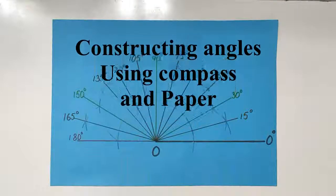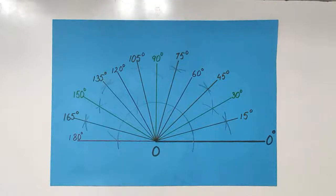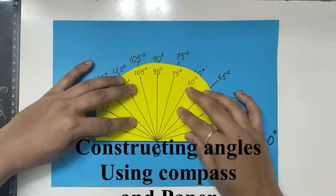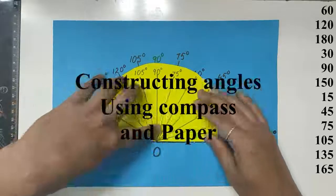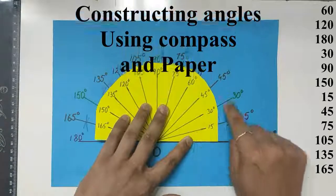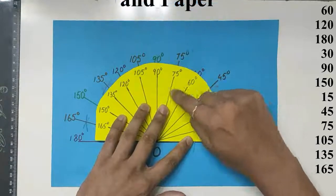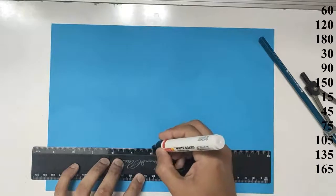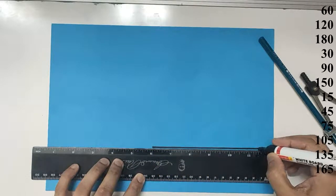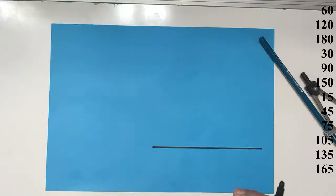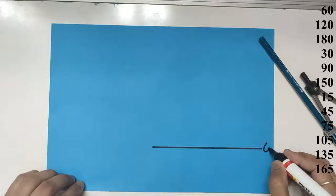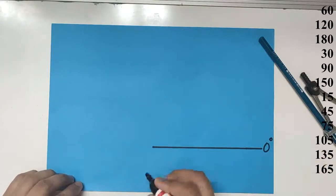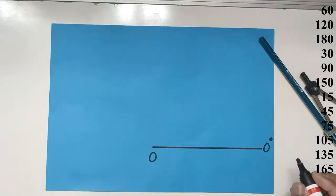Hello friends! Today we will learn how to construct different angles using a compass and a paper. First we will take a ruler and draw the main line, that is the zero degree line. That will be zero degrees and the center we will mark as O.